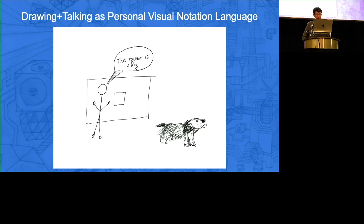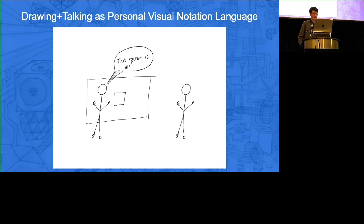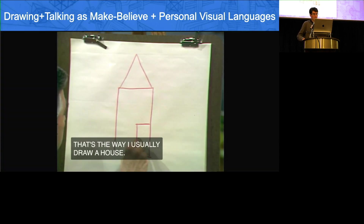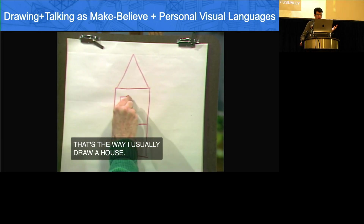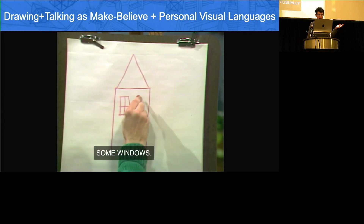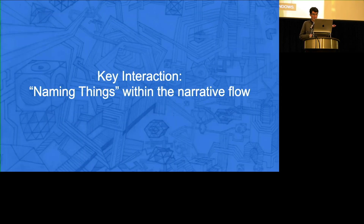Another thing worth mentioning is that when we're drawing things on a canvas, we have this remarkable ability to symbolically represent whatever we're talking about with things that don't even look like the things we're talking about. We have our own personal notations — here's someone drawing a house, but somebody else might draw a house differently.